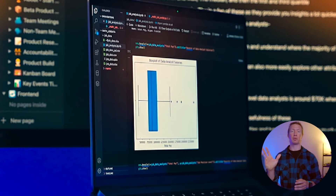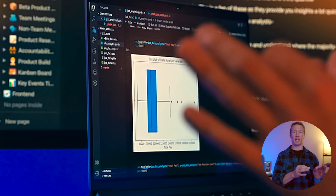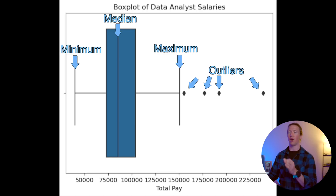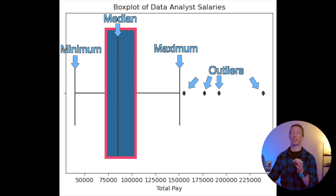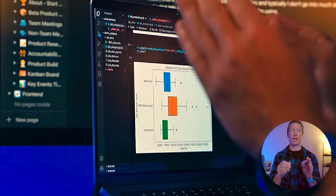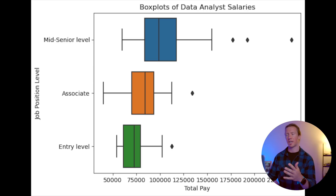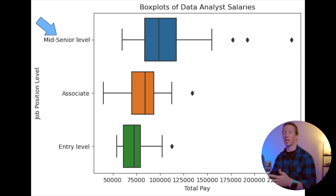Box plots, also known as box and whisker plots, are great at showing the five most important attributes about a dataset, quickly and visually. Take for example the total pay of data analysts — we can quickly find the median, minimum, and maximum, and also understand where the majority of the salaries reside within that 25th to 75th percentile. Because of the simplicity of this plot, I can more easily explore the job position level of data analysts. We can see the median salary for entry-level data analysts is around $70,000, where those for mid to senior level are around $100,000.